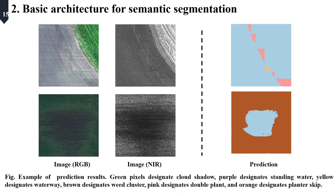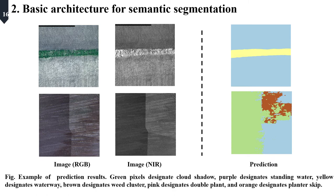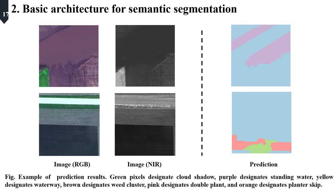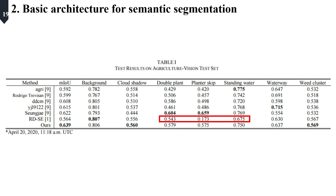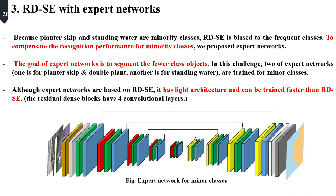This shows the prediction results for the base model. The left side is input images and the right side is prediction results. To compare with other architectures, we summarize intersection over union scores. It can be verified that some classes are higher than other architectures, but some classes are lower. Because planter skip and standing water are minority classes, the base model is biased toward the frequent classes.